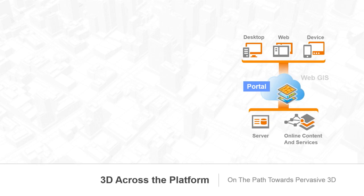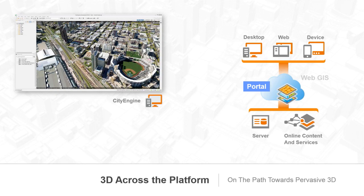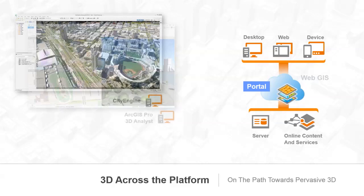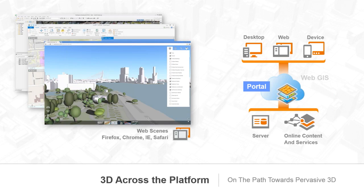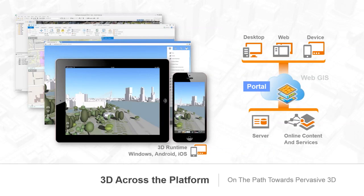As GIS users, we solve problems — that's the core of what we do. We can effectively make more out of 3D than a simple visual. We've seen some powerful desktop applications today: CityEngine and ArcGIS Pro, giving us fast, modern, and powerful tools that support current workflows and even transform the way you do GIS. However, there is also a demand to make 3D more available — more accessible across web browsers in the form of web scenes and even mobile devices through 3D-enabled applications, and then even back into desktop applications.